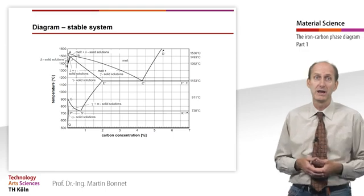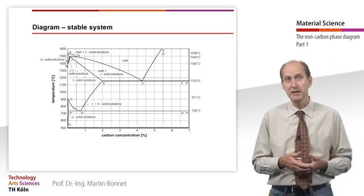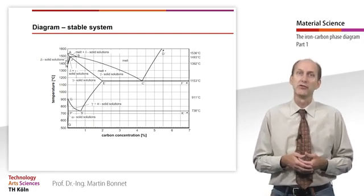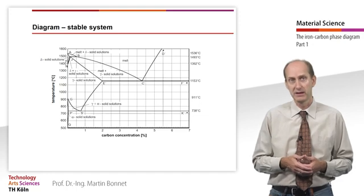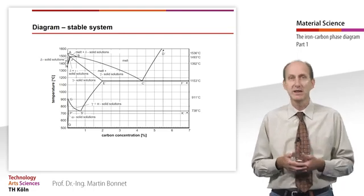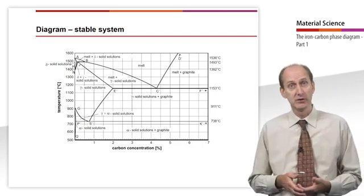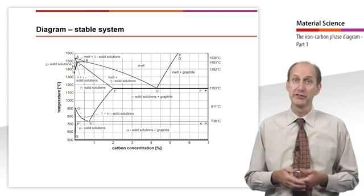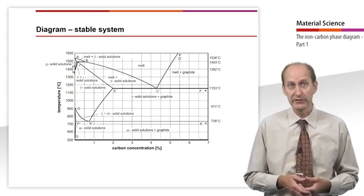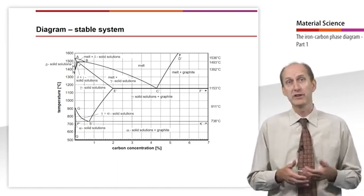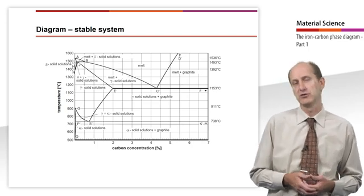Above the liquidus line there is melt. In the two-phase area between melt and delta iron, both melt and delta iron must be present. The two-phase area between melt and gamma iron must also contain both melt and gamma iron. Given that carbon is soluble in iron to a certain extent but iron is insoluble in carbon, carbon precipitates out as graphite. Thus, the remaining phase fields are melt and graphite, gamma solid solution and graphite, and finally alpha solid solution and graphite.